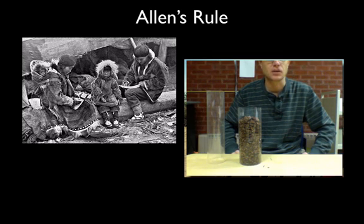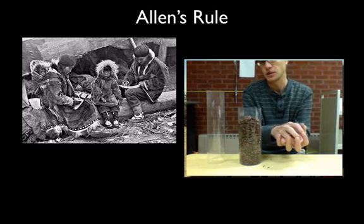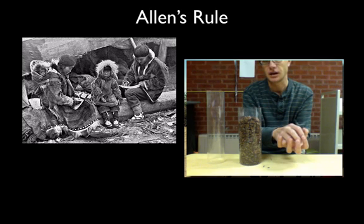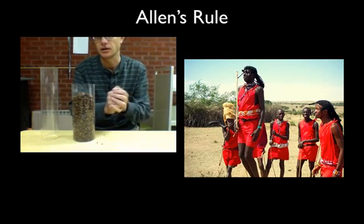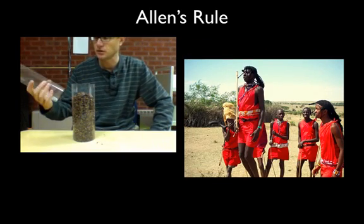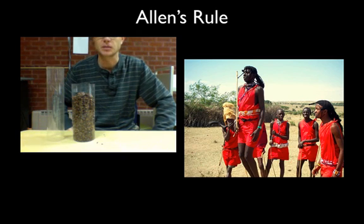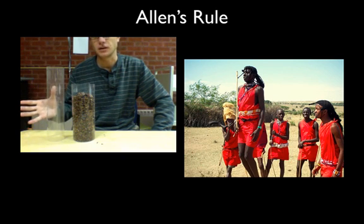just like a polar bear, is that they want to maximize their volume because they don't want to lose a lot of energy in the form of heat. Likewise, when we go towards the equator, the people are going to look more tall and more skinny, and that's because they want to maximize their surface area so they can get rid of heat.